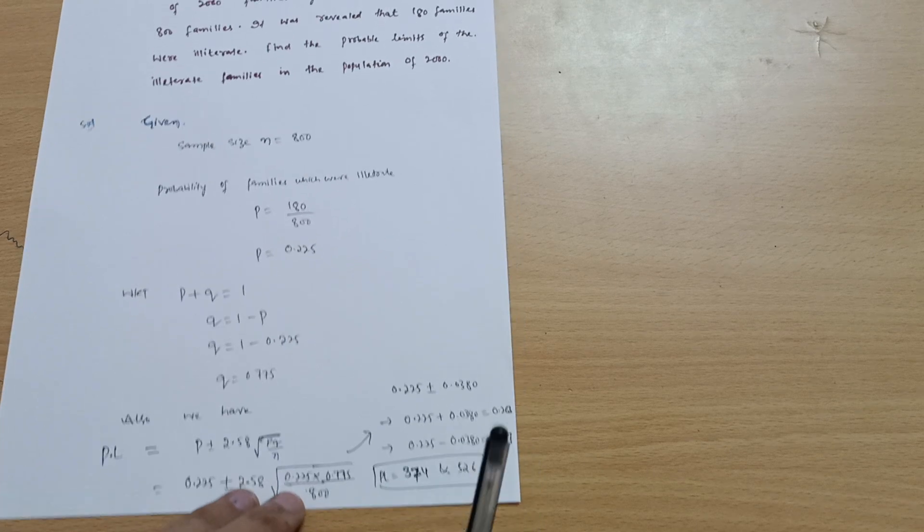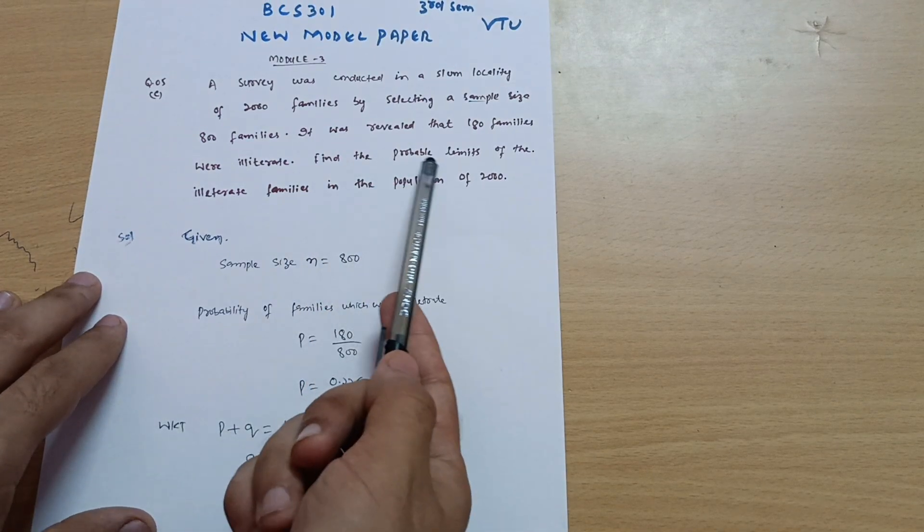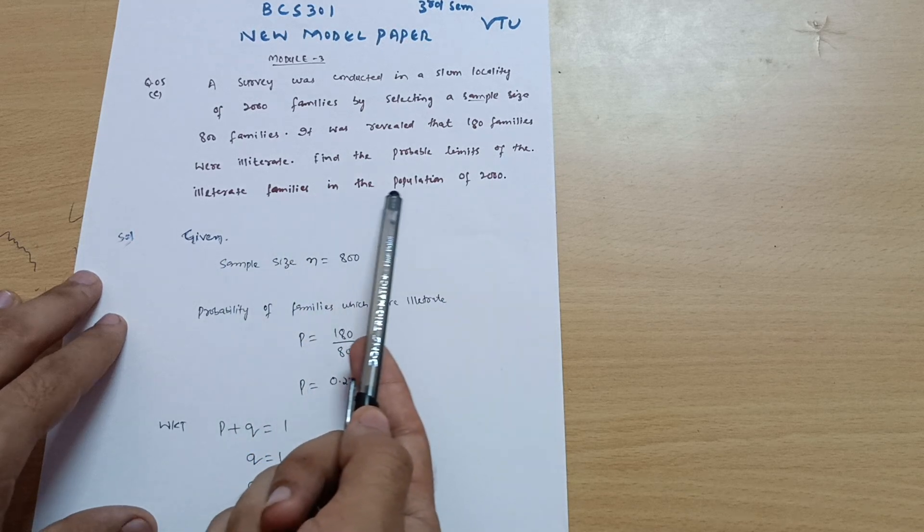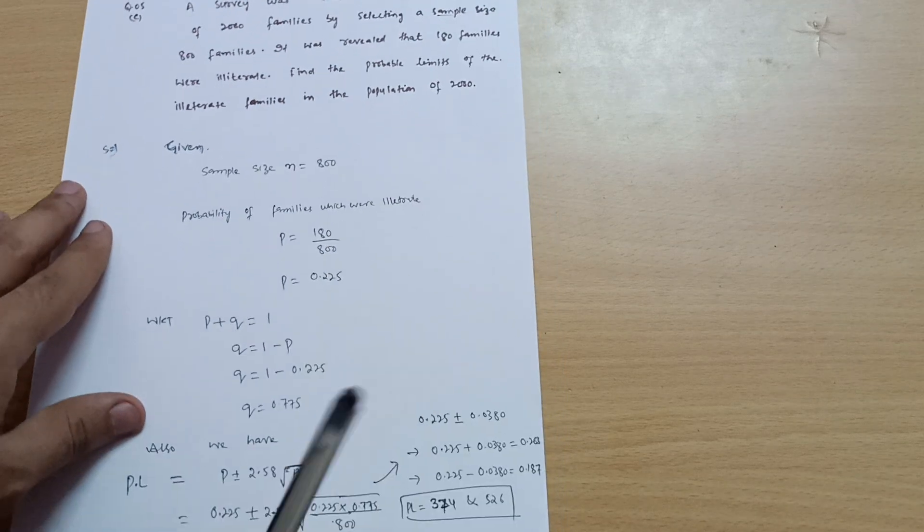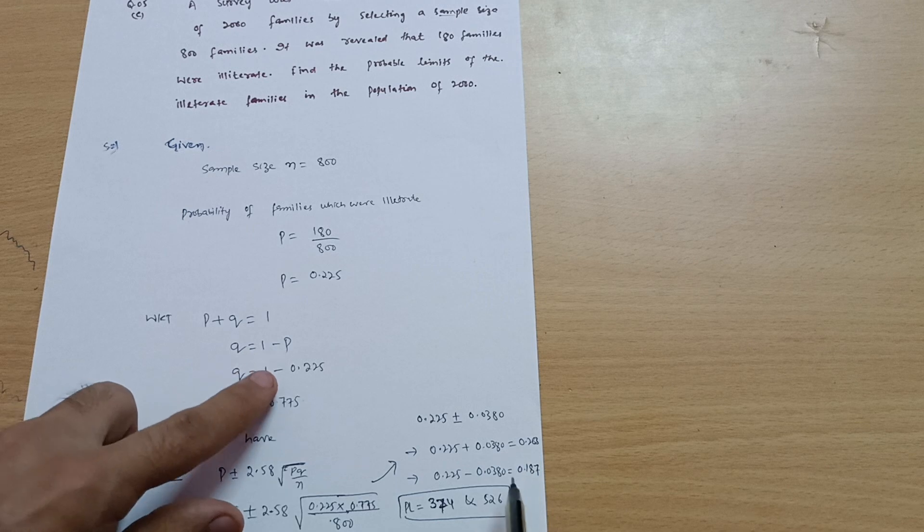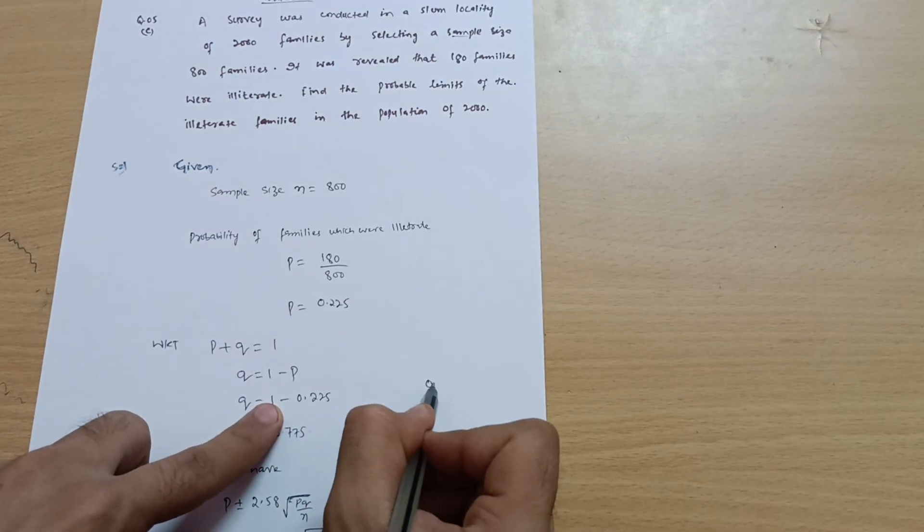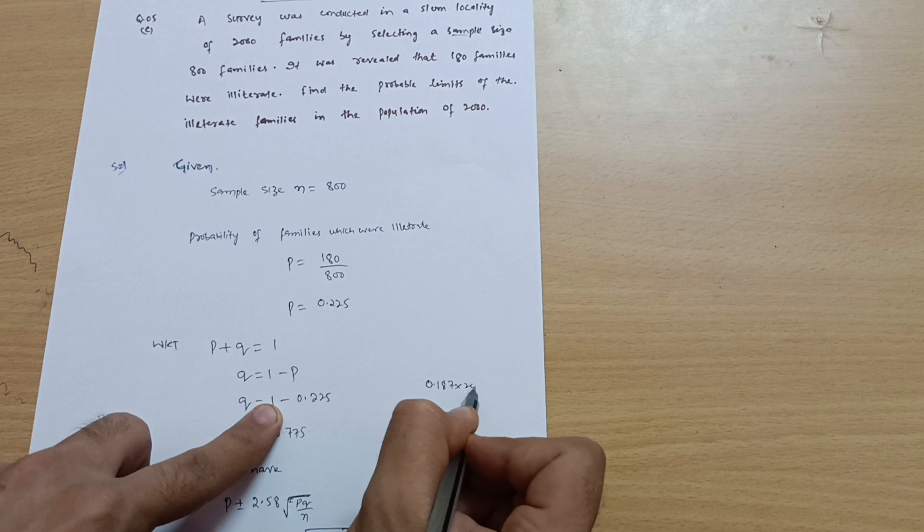But we are supposed to calculate the probable limits of the illiterate families in the population of 2000. So out of 2000 we have to take, so you have to simply multiply this 0.187 multiplied by 2000 and 0.263 multiplied by 2000.